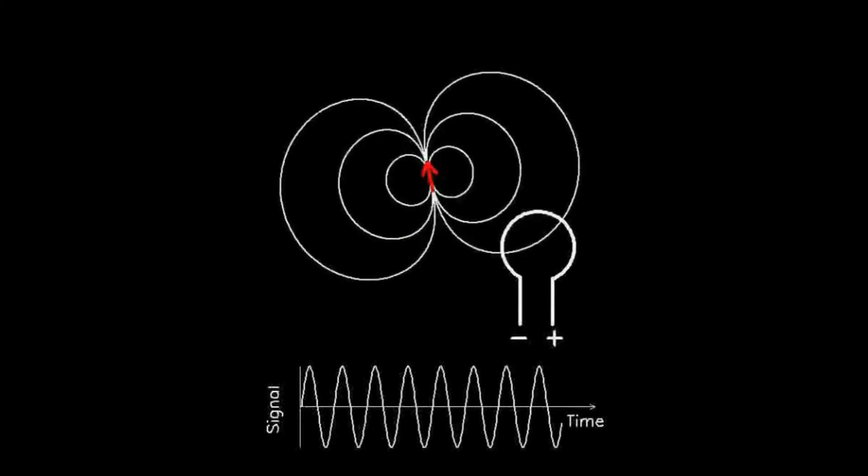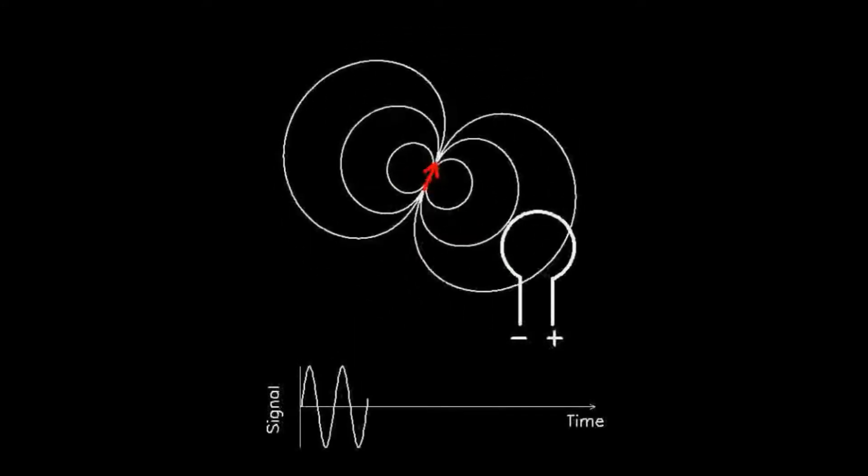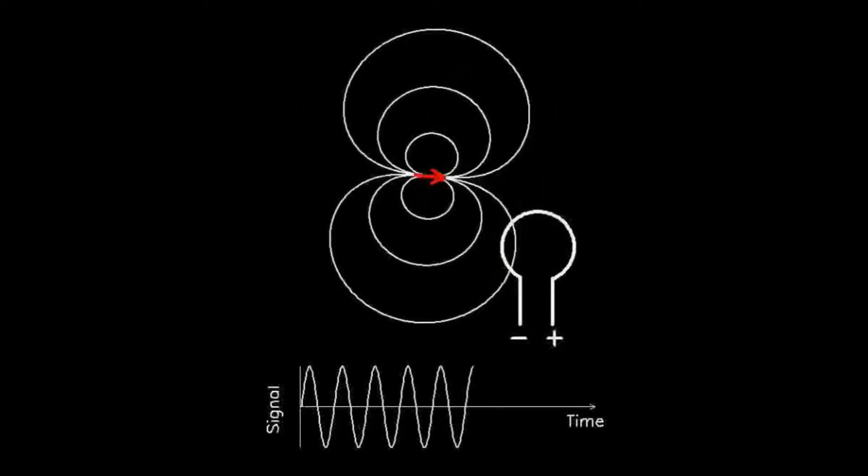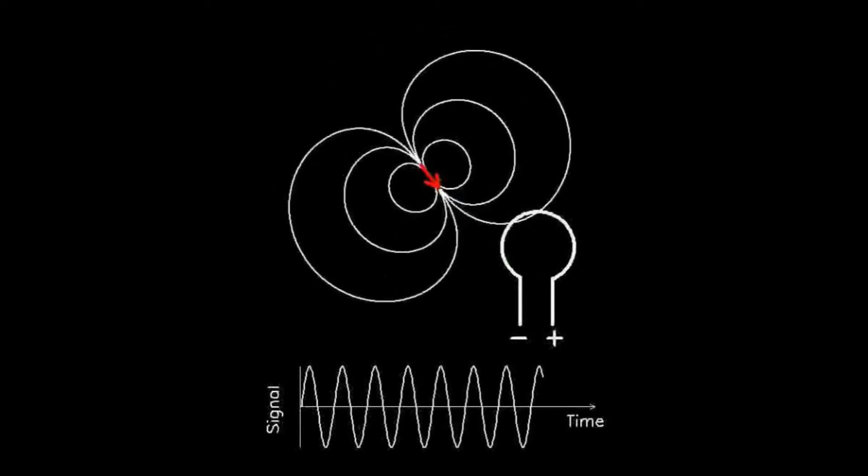Now, the laws of physics tell us that a changing magnetic field induces an electric field, and a changing electric field induces a magnetic field.